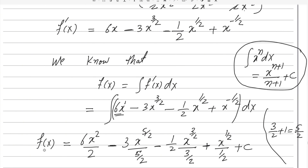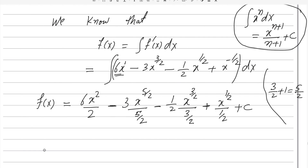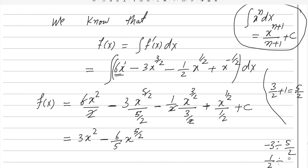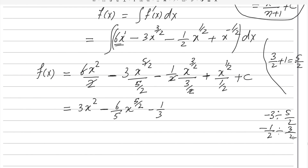Simplifying: 6x²/2 becomes 3x²; minus 3 divided by (5/2) becomes minus 6/5, giving minus (6/5)x^(5/2); minus (1/2) divided by (3/2) gives minus 1/3, giving minus (1/3)x^(3/2); and 1 divided by (1/2) gives 2, so plus 2x^(1/2) plus c. Therefore f(x) equals 3x² minus (6/5)x^(5/2) minus (1/3)x^(3/2) plus 2x^(1/2) plus c.